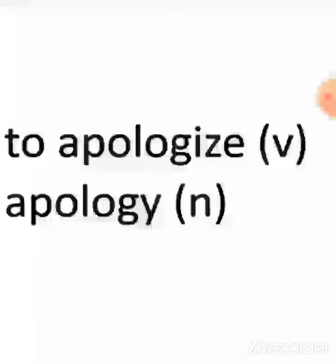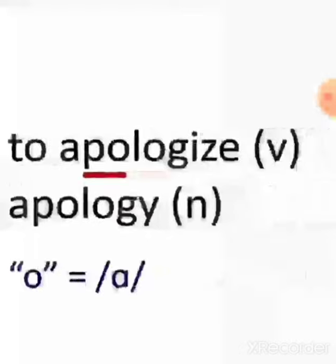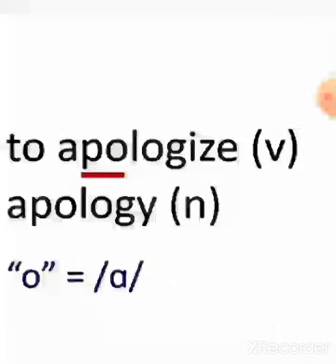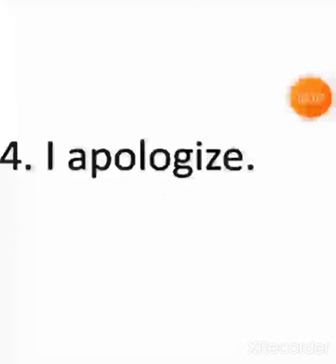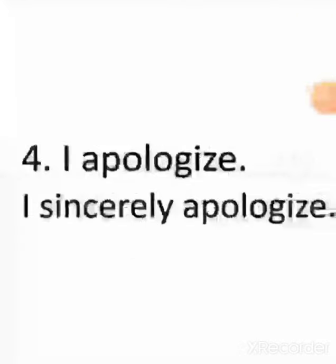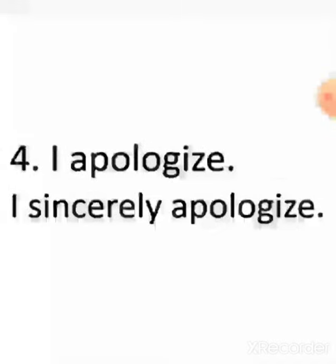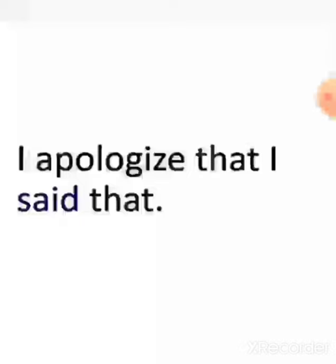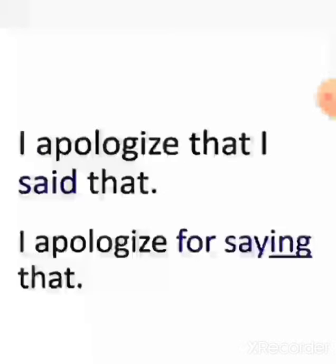Now we will use a new word: to apologize, or apology. To apologize is a verb and apology is a noun. You will have to pronounce the first sound like 'a' — apologize. I apologize. It simply means I'm sorry. I sincerely apologize. I apologize that I said that, or I apologize for saying that. I apologize that I hurt your feelings. I apologize for hurting your feelings.